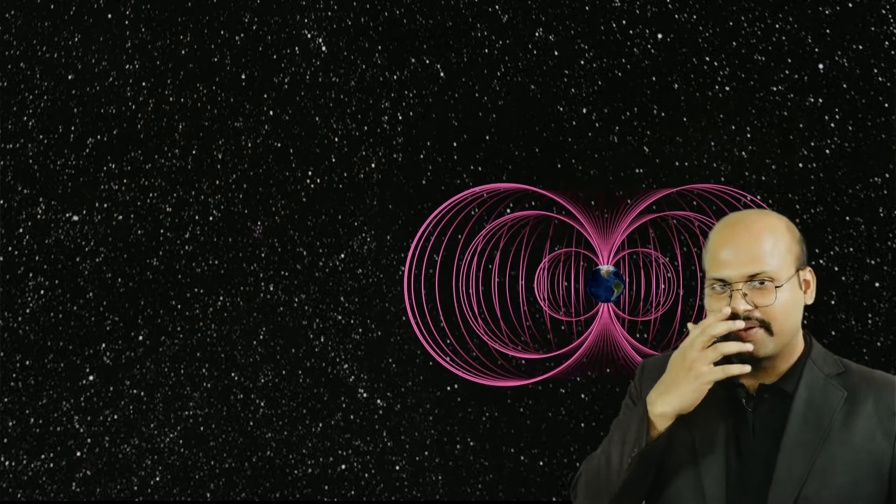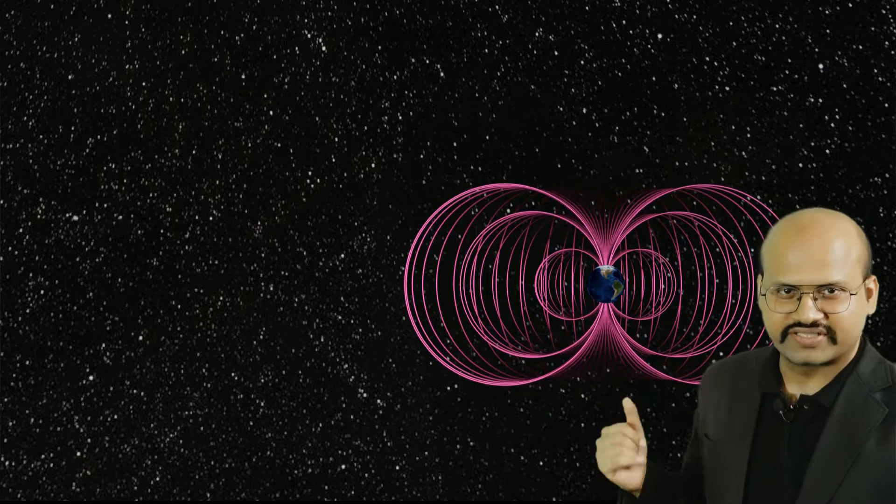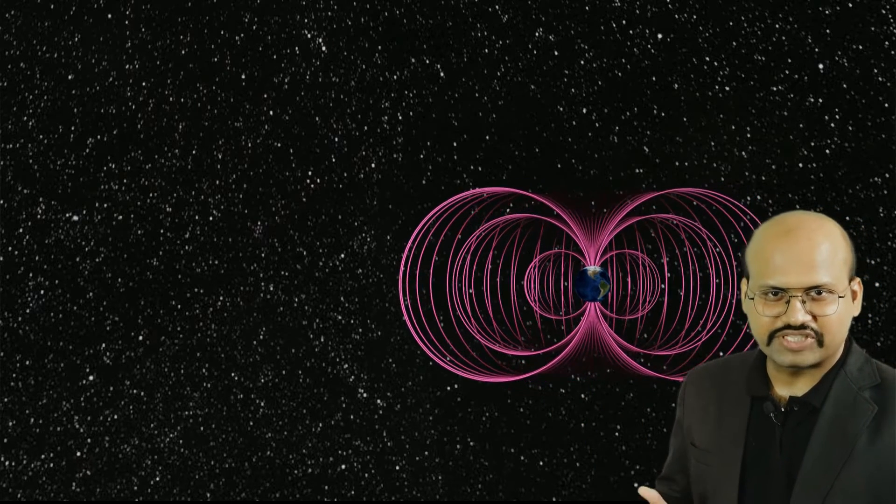To start with, we know that our Earth has a magnetic field which is donut shaped. But due to the presence of the sun and its magnetic field, our Earth's magnetic field gets modified. We see that our Earth's magnetic field is compressed facing the sun, while away from the sun it is very much elongated.